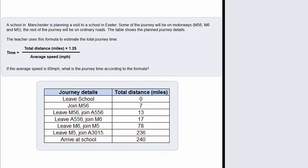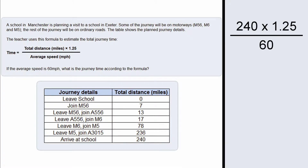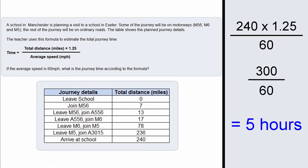Now what we need to do is simply put this into the formula. So we have that the time is equal to the total distance in miles — 240 — multiplied by 1.25, divided by 60. Now 240 multiplied by 1.25 gives us 300. So we have 300 divided by 60, which gives us 5. So the answer to this question is 5 hours.